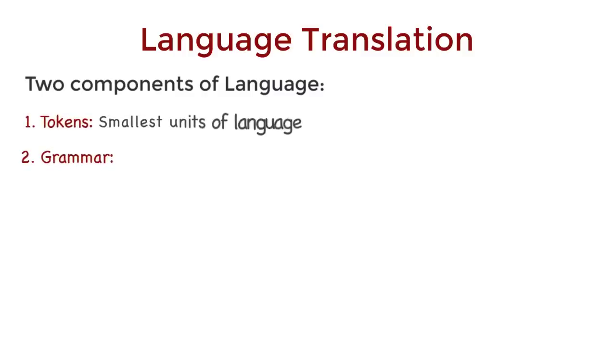Tokens are the smallest units of language. Grammar defines how these tokens should appear so that they make sense. In this context, tokens are words. Every word is a token.